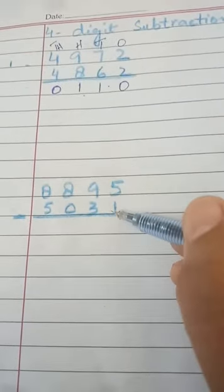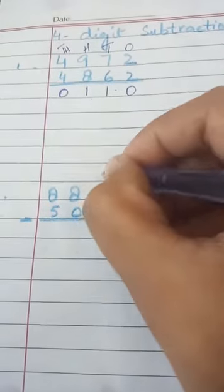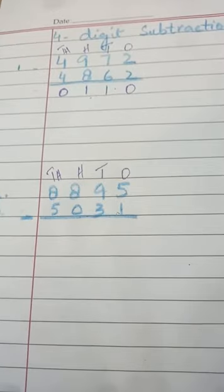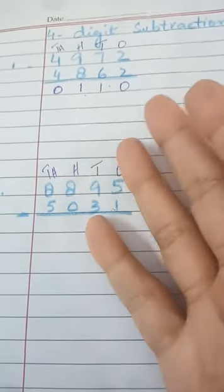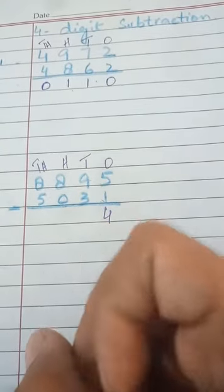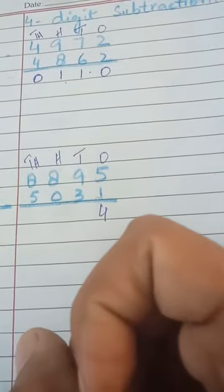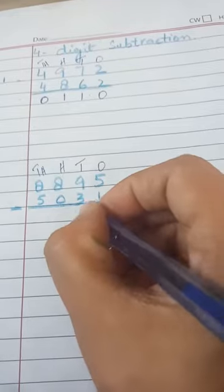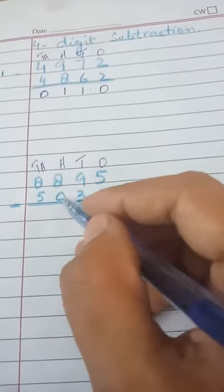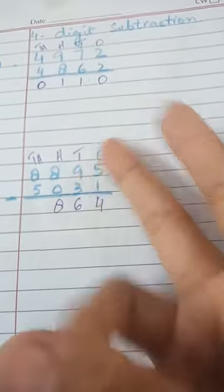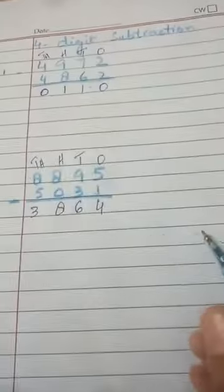Next 4-digit problem: 8895 minus 8031. Give them names: ones, tens, hundreds, thousands. Ones: 5 minus 1 — count after 1: 2, 3, 4, 5 — 4 fingers, so the answer is 4. Tens: 9 minus 3 — count after 3: 4, 5, 6, 7, 8, 9 — 6 fingers, so the answer is 6. Hundreds: 8 minus 0 means minus nothing, so we write 8. Thousands: 8 minus 8 is 0. Answer is 0864.